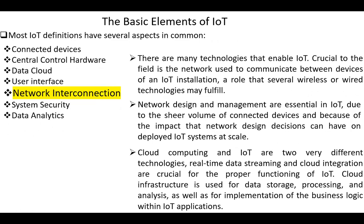Next, network interconnection. There are many technologies that enable IoT. Crucial to the field is the network used to communicate between devices for an IoT installation, a role that several wireless or wired technologies may fulfill. Network design and management are essential in IoT, due to the large volume of connected devices and the impact that network design decisions can have on deployed IoT systems at scale. Real-time data streaming and cloud integration are crucial for the proper functioning of IoT. Cloud infrastructure is used for data storage, processing, and analysis, as well as for implementation of the business logic within IoT applications.